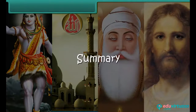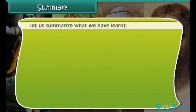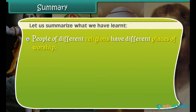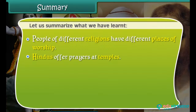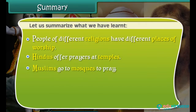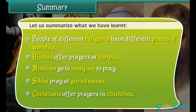Summary. Let us summarise what we have learnt. People of different religions have different places of worship. Hindus offer prayers at temples. Muslims go to mosques to pray. Sikhs pray at Gurdwaras. Christians offer prayers in churches.